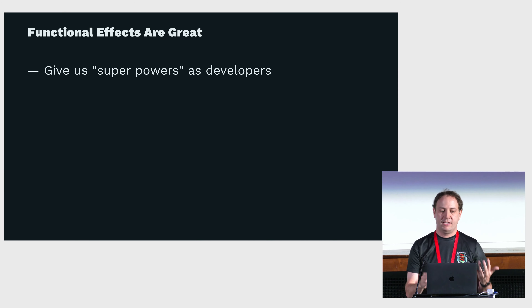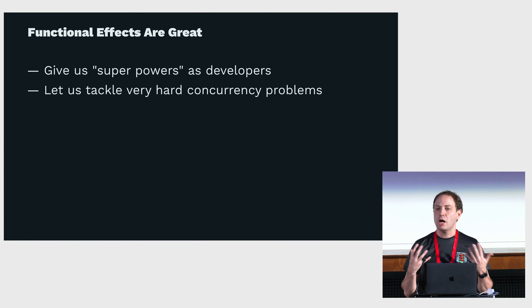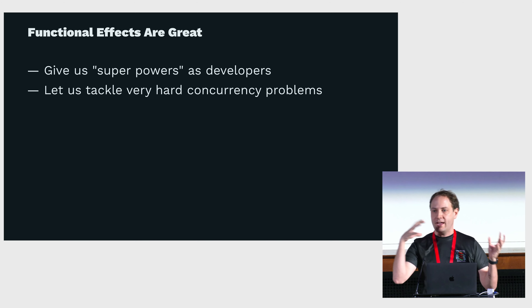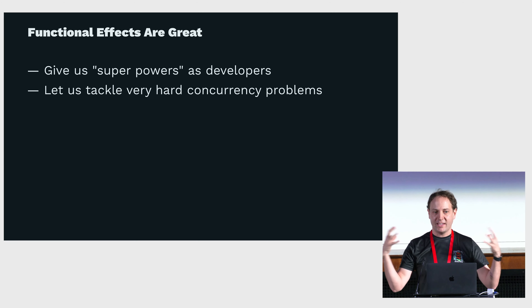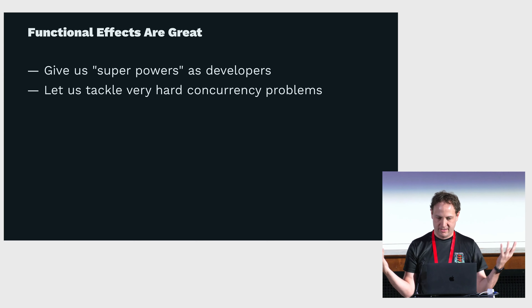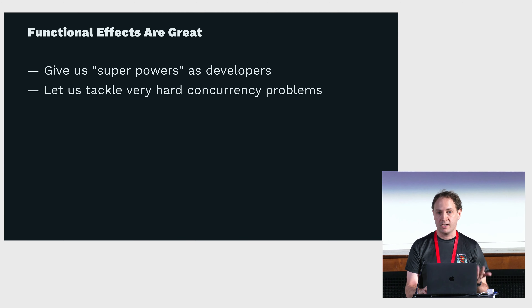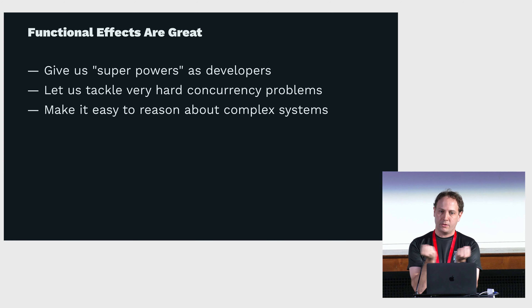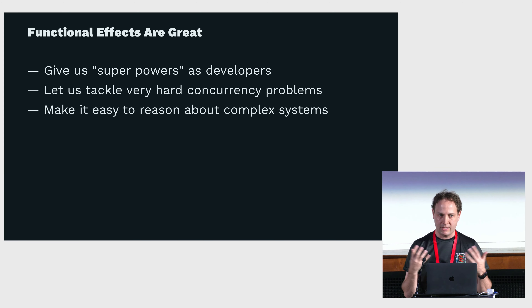That's what functional effects give us. They let us solve very hard concurrency problems — doing things in parallel, interrupting them, having resource safety — and that comes together almost effortlessly using these operators. It lets us be a lot more productive and build complex systems from simpler components where we can reason about each part, and then the parts fit together in just the right way to build the more complex solution we need.